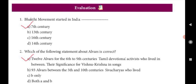Second question: Which of the following statements about Alwars is correct? Answer A: 12 Alwars from the 6th to 9th centuries were Tamil devotional activists who lived singing their devotion to Vishnu and Krishna in songs.